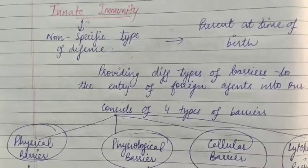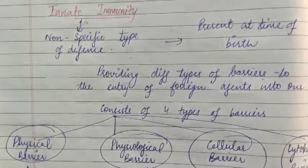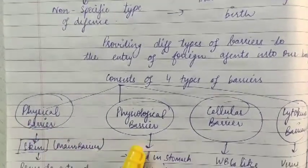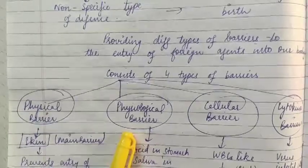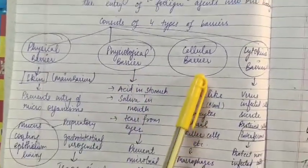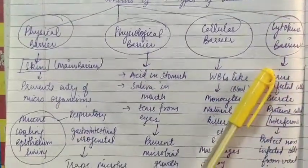There are four types of barriers that protect us. First is the physical barrier. Second is the physiological barrier. Third is the cellular barrier. And the last one is the cytokine barrier.